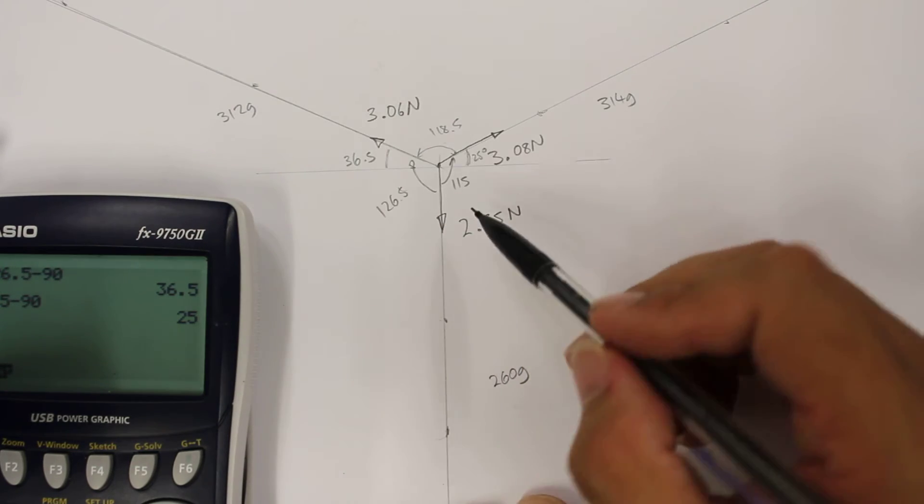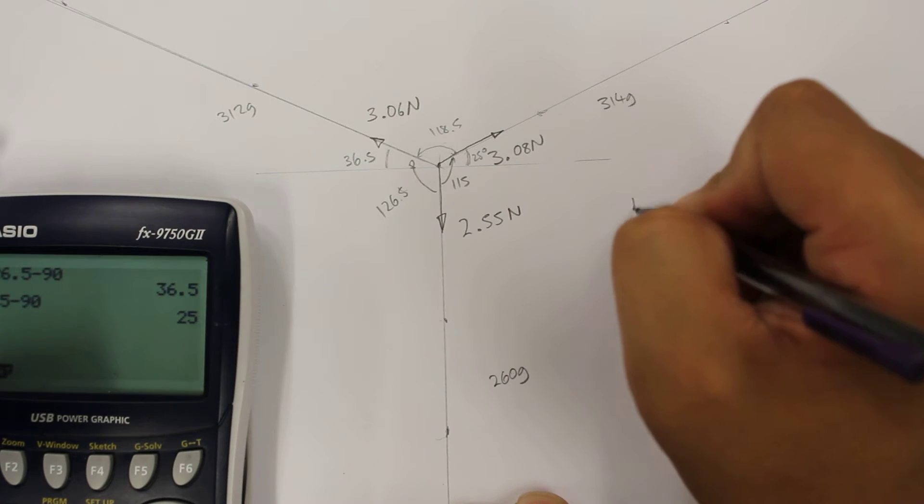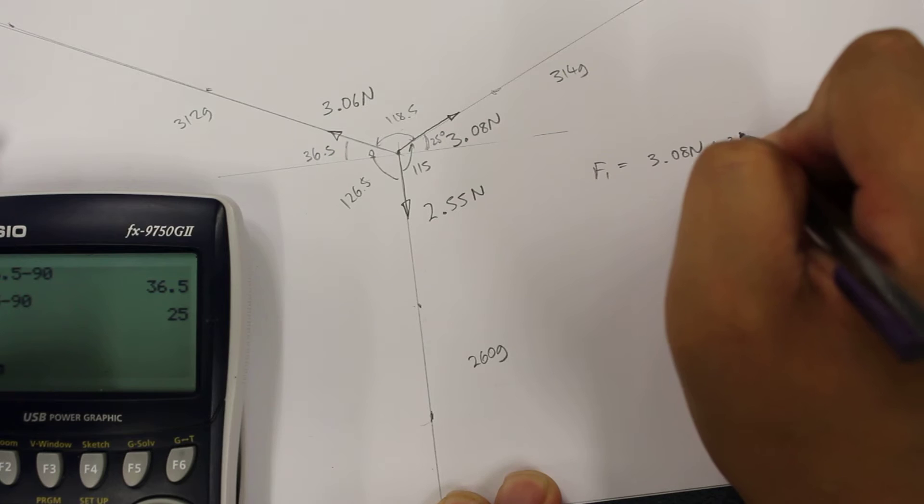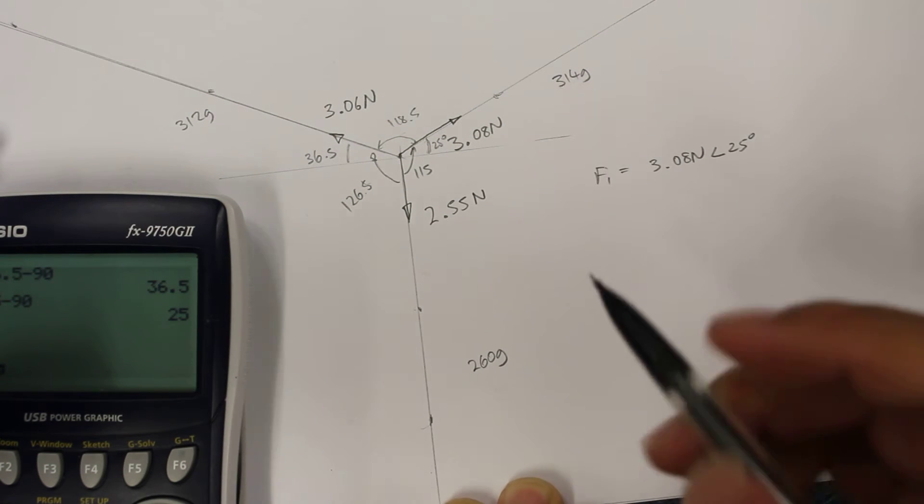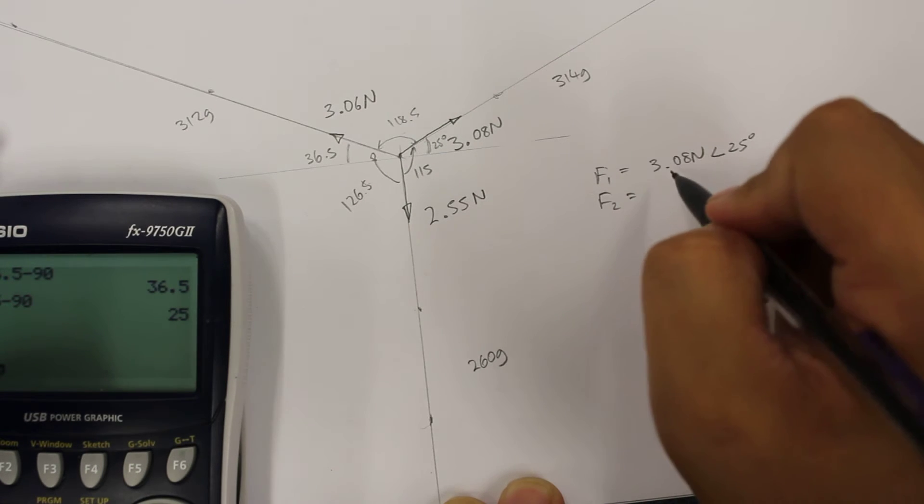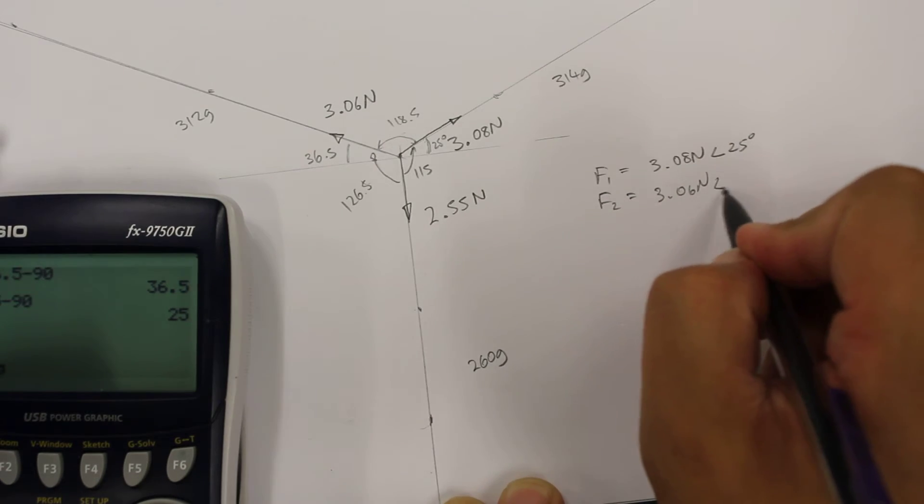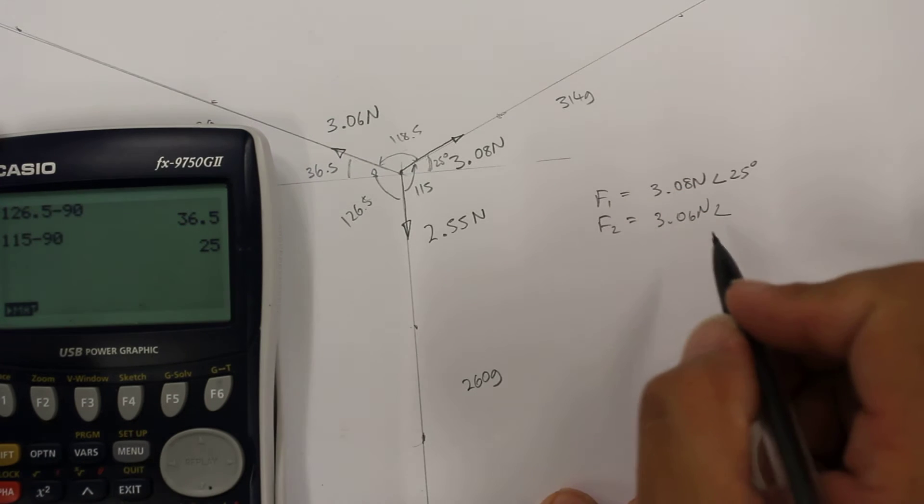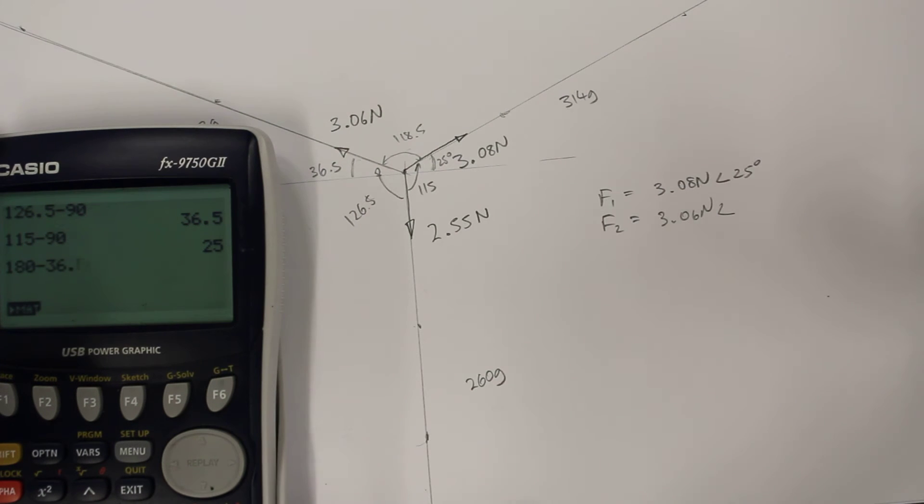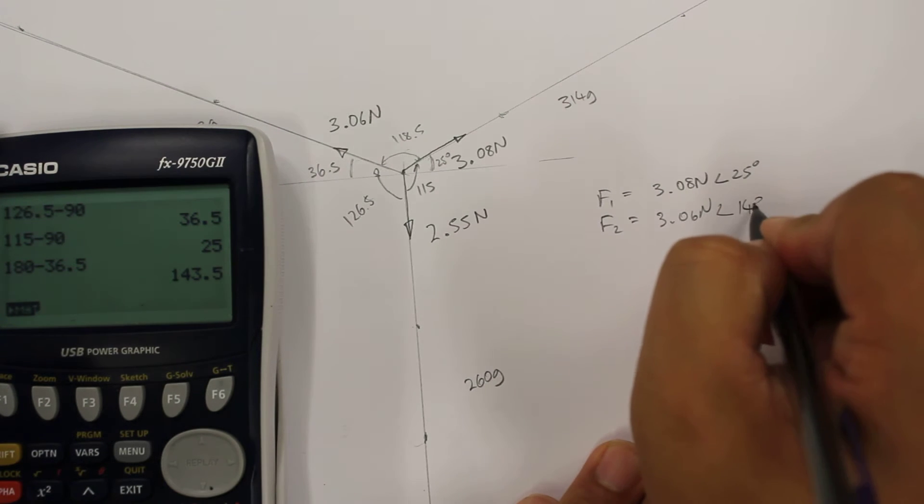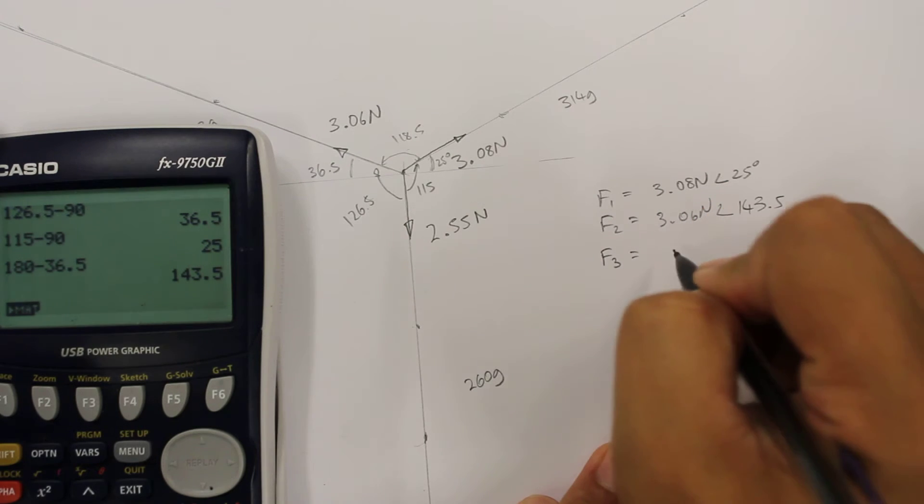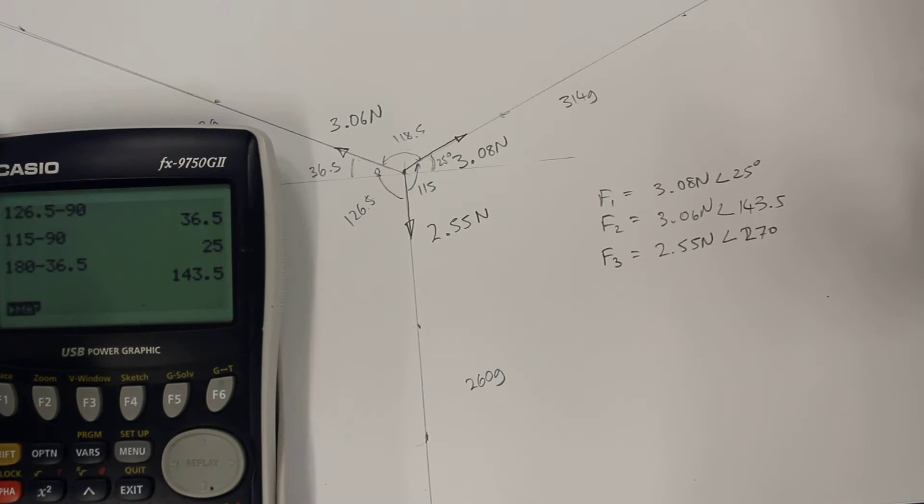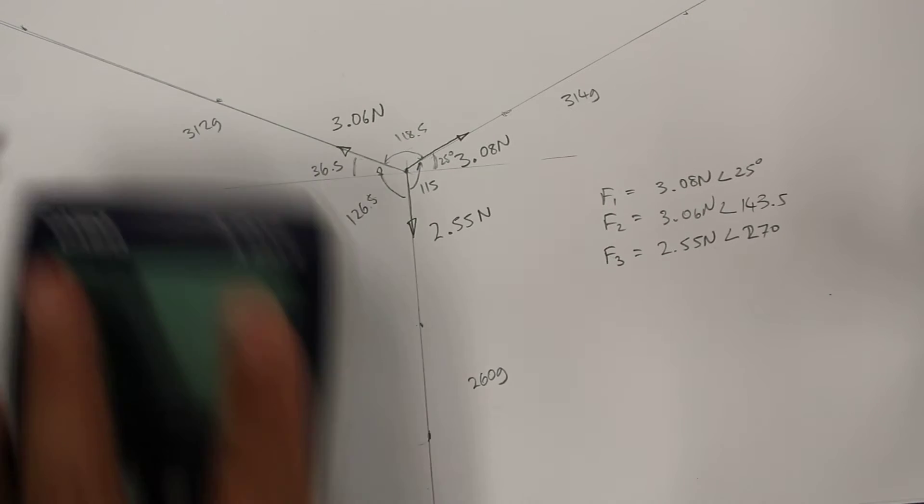So we're going to use these three vectors. We have one force vector, which is F1, which has a magnitude of 3.08 Newtons and an angle of 25 degrees. We have a second one, which is F2 equal to 3.06 Newtons, acting on an angle of 143.5 degrees. And F3 is pointing straight down, so that's 2.55 Newtons at an angle of 270. So what we'll do is add these vectors head to tail, and they should form a closed polygon of forces.